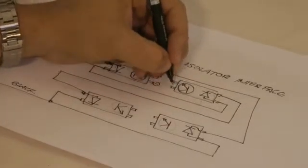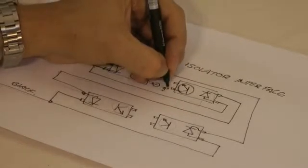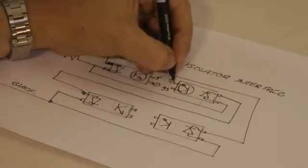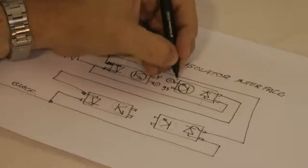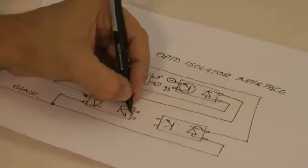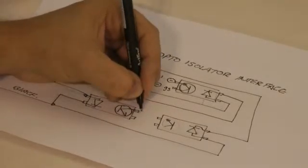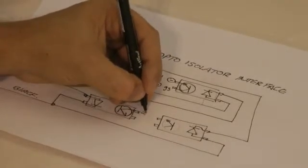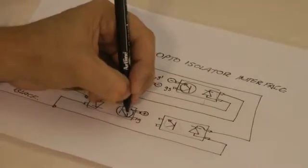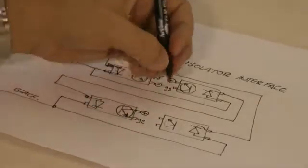Then this transistor will go to positive power and this part of the transistor will go to gate two.